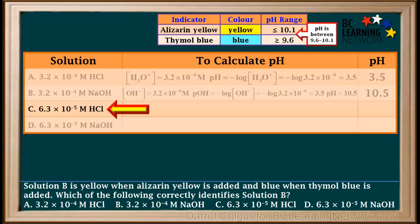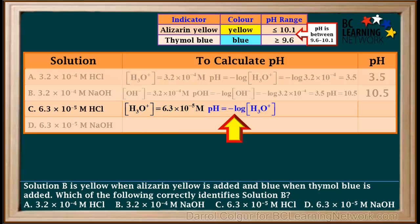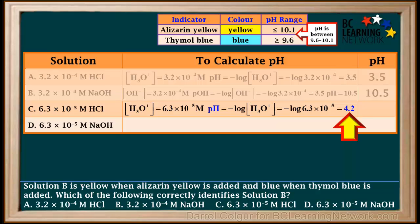Now we'll consider the third solution, 6.3 times 10 to the negative fifth molar HCl. Because HCl is a strong acid, the hydronium ion concentration is equal to the concentration of the acid, which is 6.3 times 10 to the negative fifth molar. pH is the negative log of the hydronium ion concentration, or the negative log of 6.3 times 10 to the negative fifth, which to one decimal place comes out to 4.2.